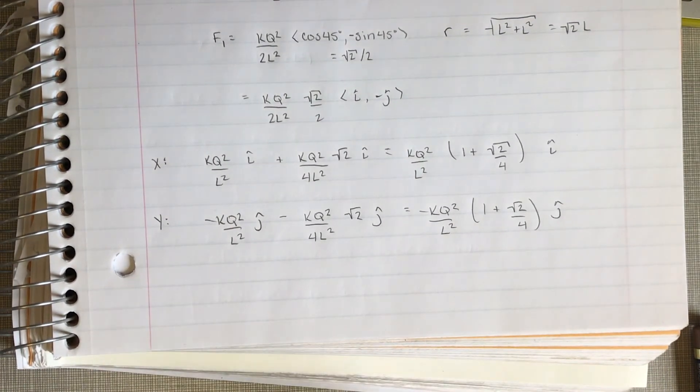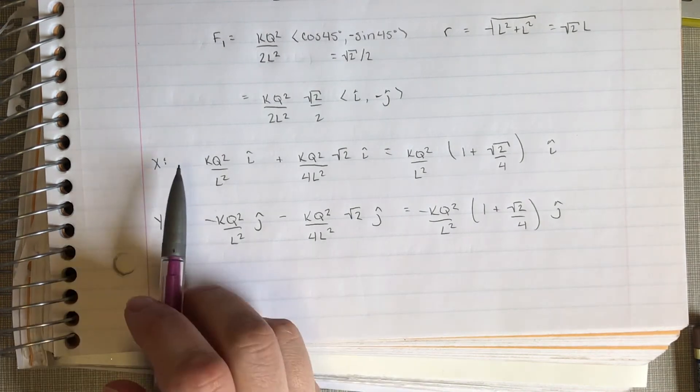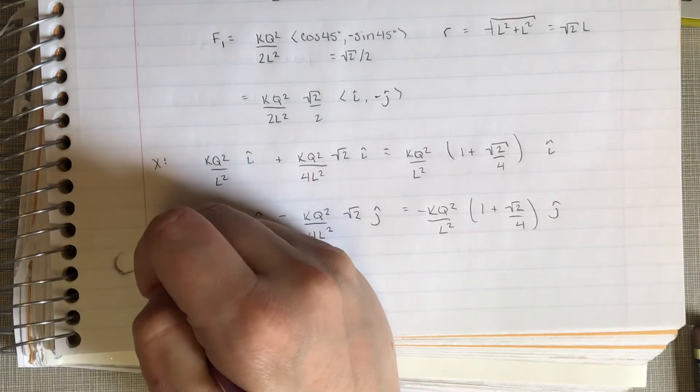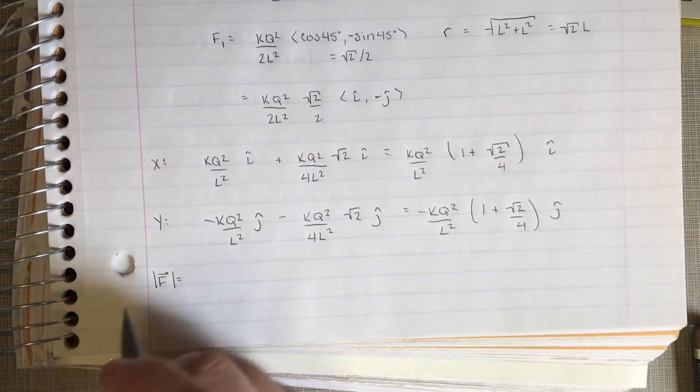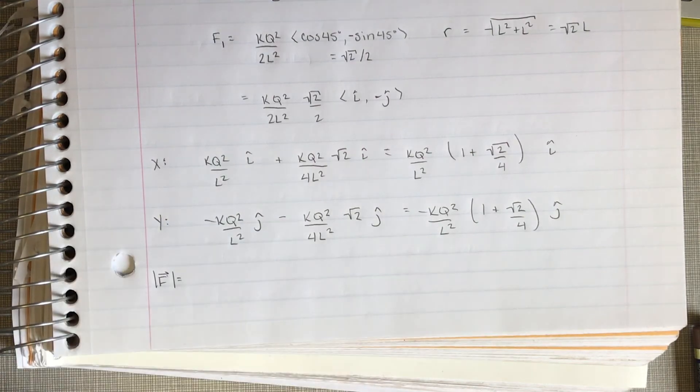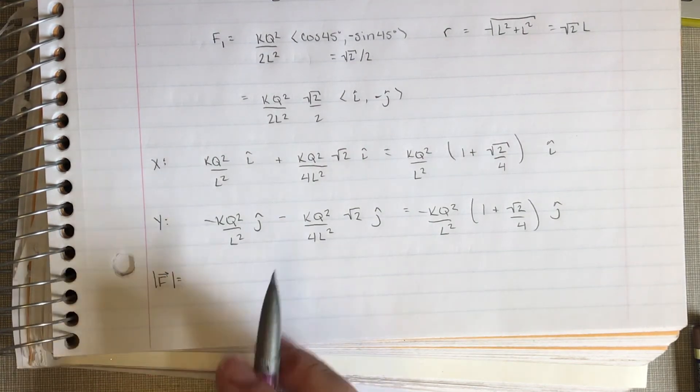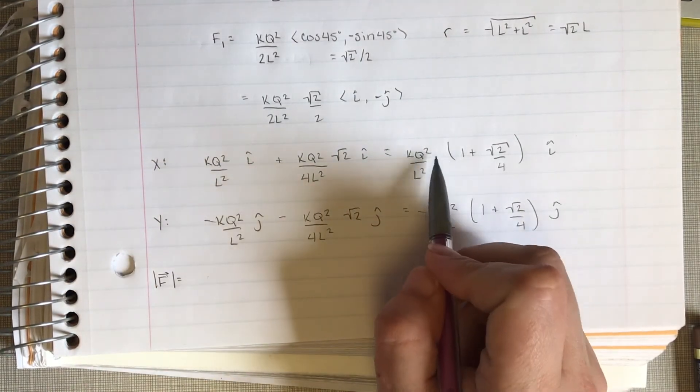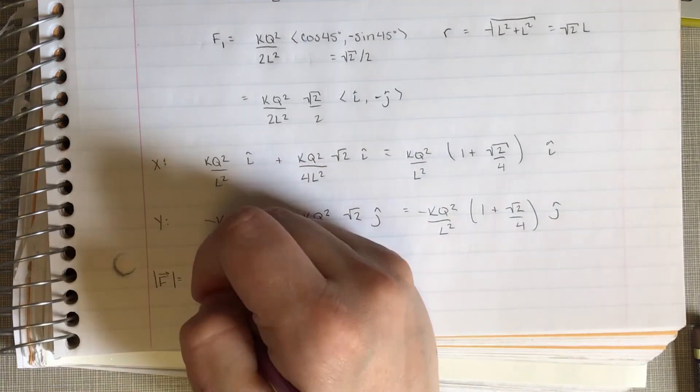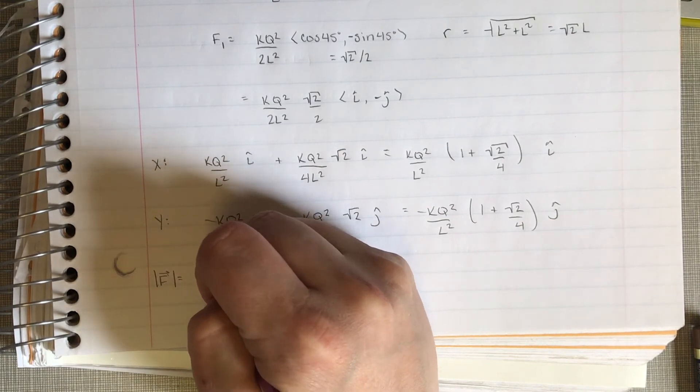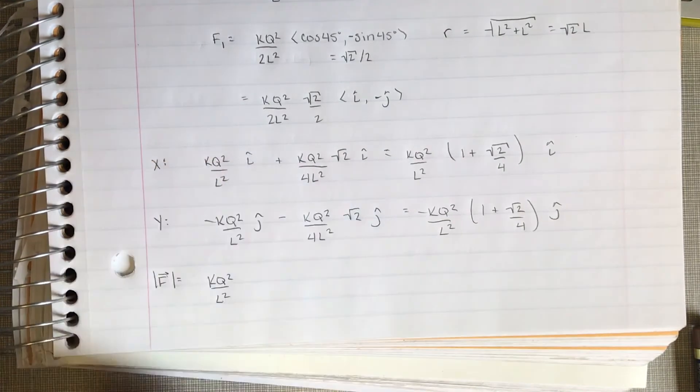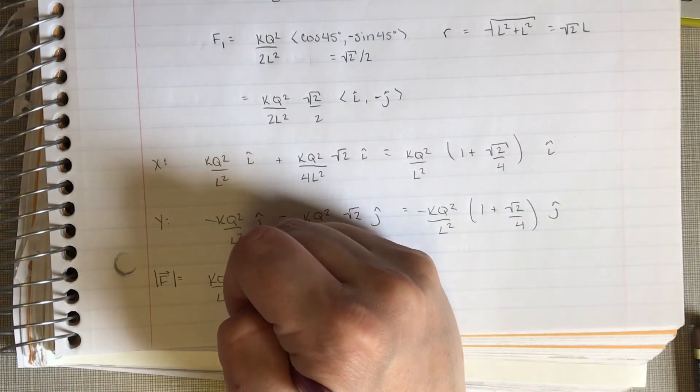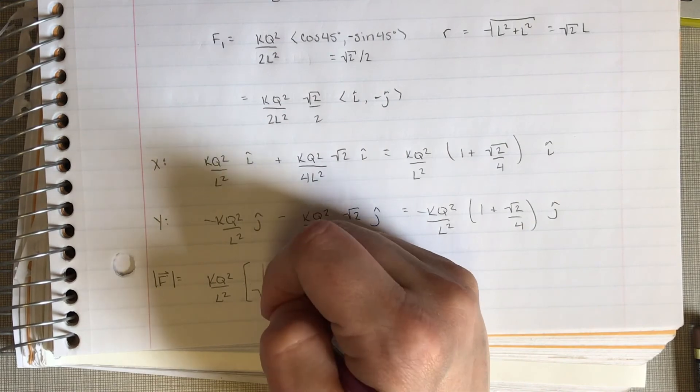Now we find the magnitude. It's like finding the hypotenuse of a triangle: this is a leg, this is a leg. So the magnitude of our force, that's what these little bars on the side mean, means the magnitude of this vector. I'm going to take x squared plus y squared. Both of these have k q squared over L squared, so I'm just going to save us all some time and pull those outside.